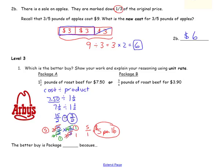Now to compare the prices, we need to find the unit rate for package B. We have the cost, $3.90, which is 3 and 9 tenths, divided by the product of 3 fourths. Let's change this mixed number to an improper fraction: 30 plus 9 is 39, so 39 tenths. We'll multiply by the reciprocal — 4 thirds.